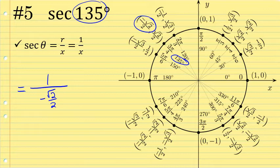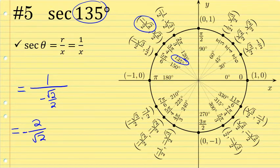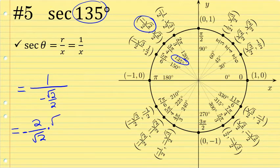We're going to rewrite this so it's not a complex fraction and so that it is rationalized. A property of reciprocals states that one over a fraction is the same as the reciprocal of that fraction, so one over negative √2/2 is the same as negative two over the square root of two. This is not rationalized — there's an irrational number in the denominator — so I'll rationalize by multiplying the top and bottom by the square root of two.